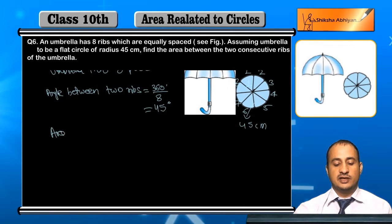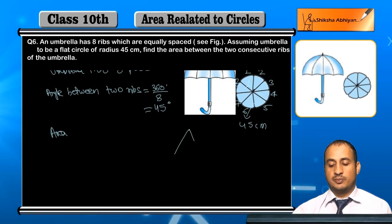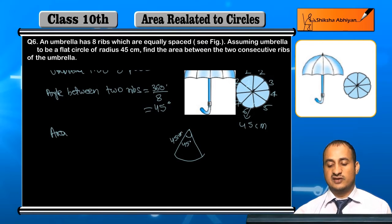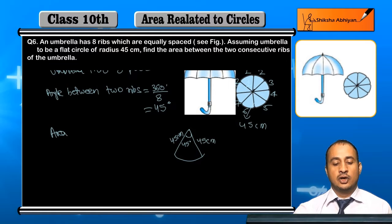Area between two ribs - you can see here the angle is 45 degrees, radius is 45 cm. So the area of sector formula is: area between two ribs equals...